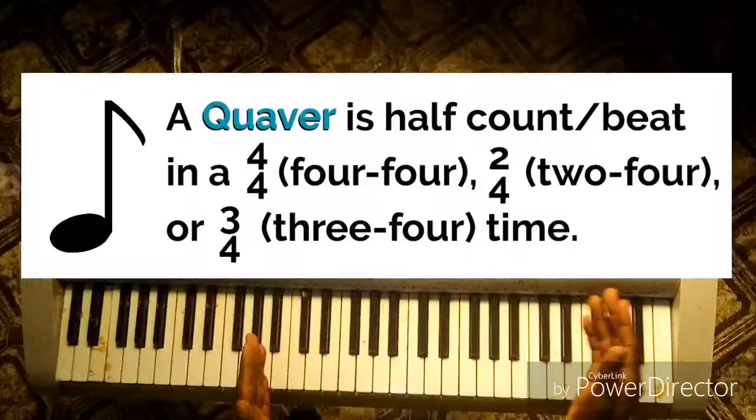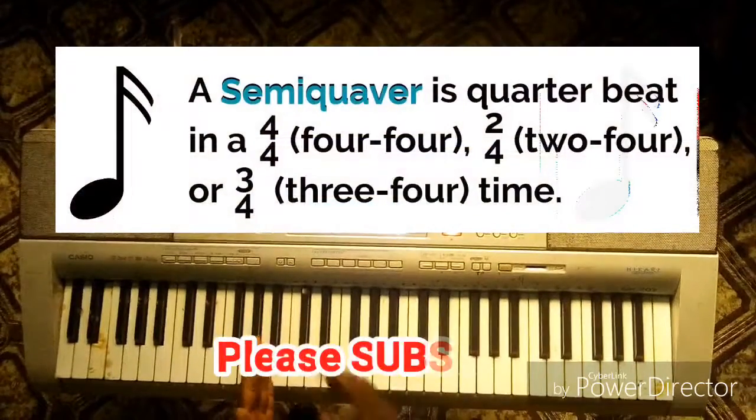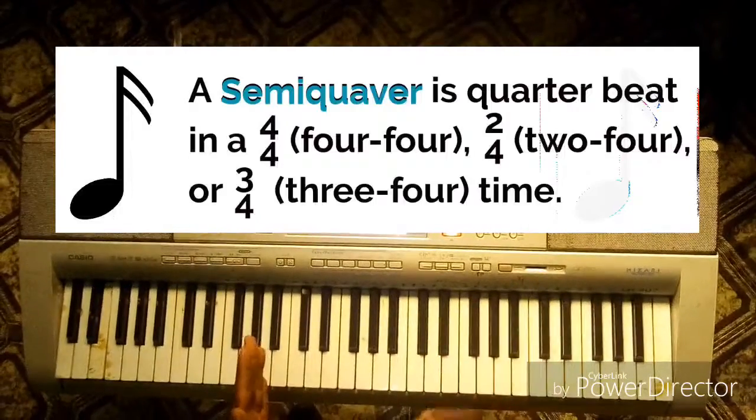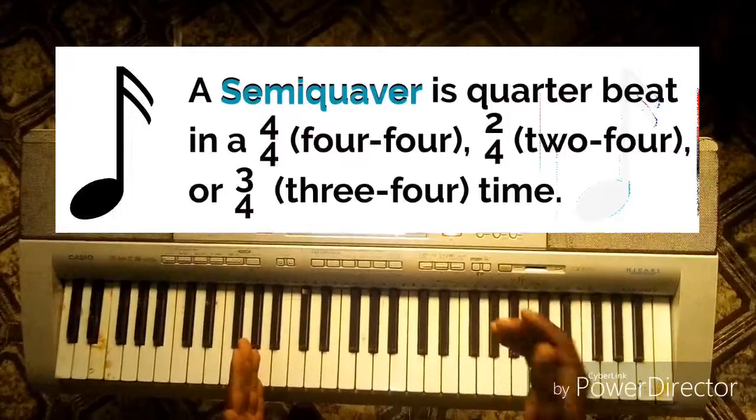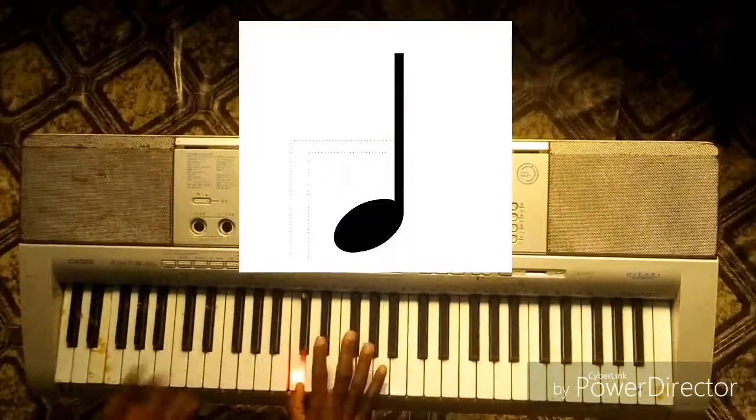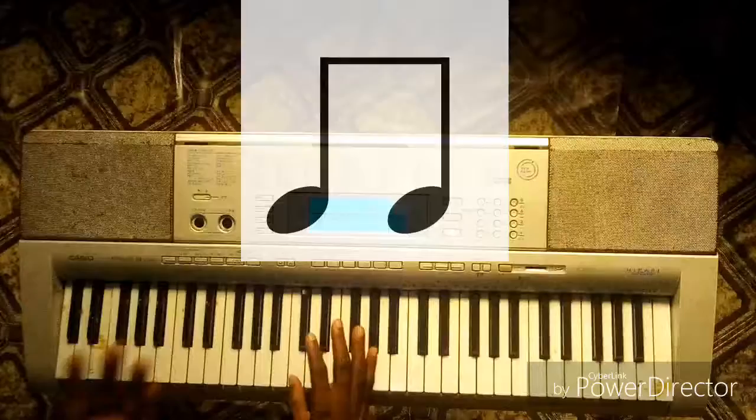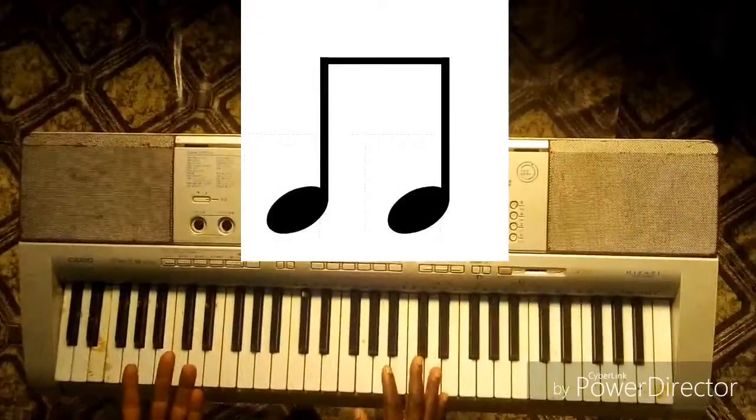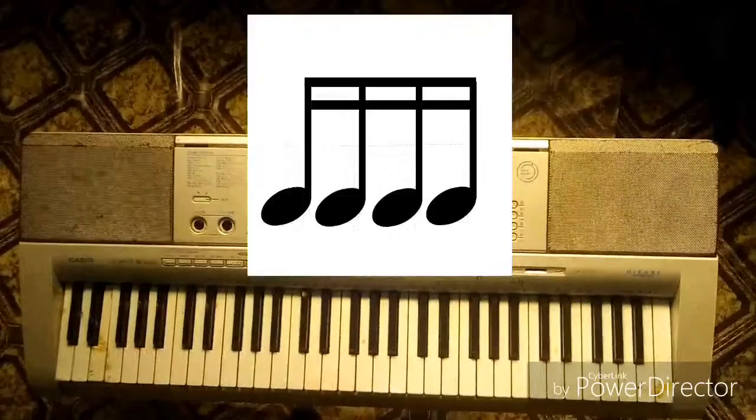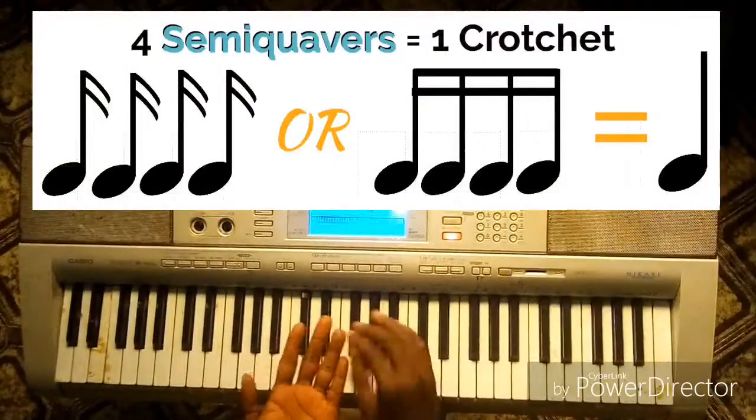In a 4/4 time, that means the semiquaver will now be a quarter beat in a 4/4 time. So if I have this as one beat, the quaver is half. Then the semiquaver becomes one, two, three, four in one count.